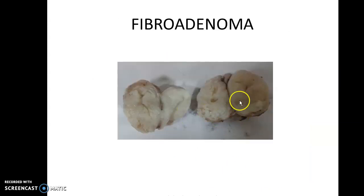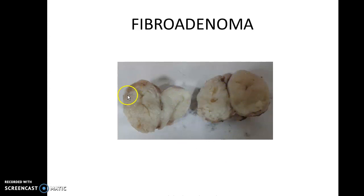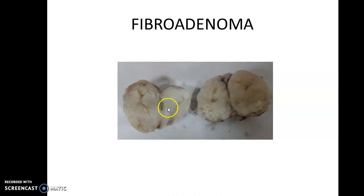Another specimen of the breast — this is a lumpectomy specimen of a circumscribed lesion which is grey-white, rubbery with slit-like spaces. This is a specimen of fibroadenoma, which is a benign tumour of the breast, also called the mouse in the breast.